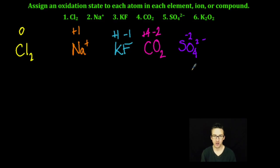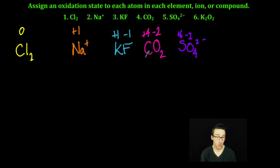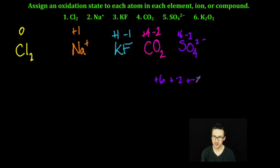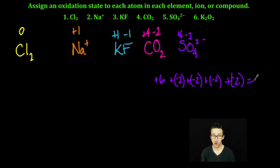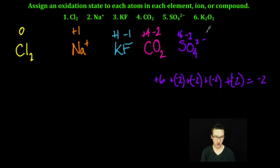And then as I go to assign the oxidation number to sulfur, it's going to get an oxidation state of plus six. Why plus six? A plus six plus a negative two plus a negative two plus a negative two plus a negative two equals negative two, or two minus, which is the charge of our ion overall.